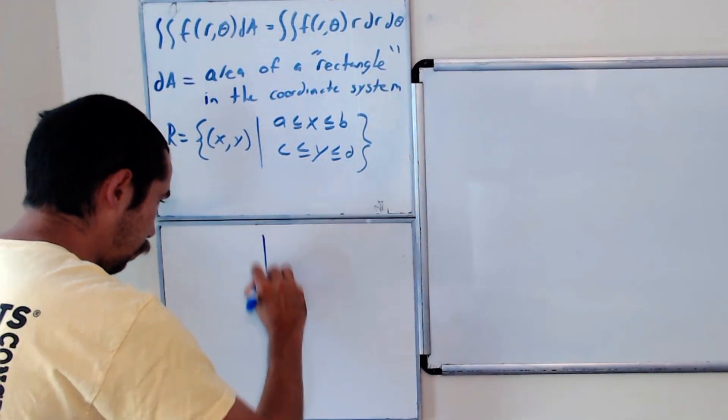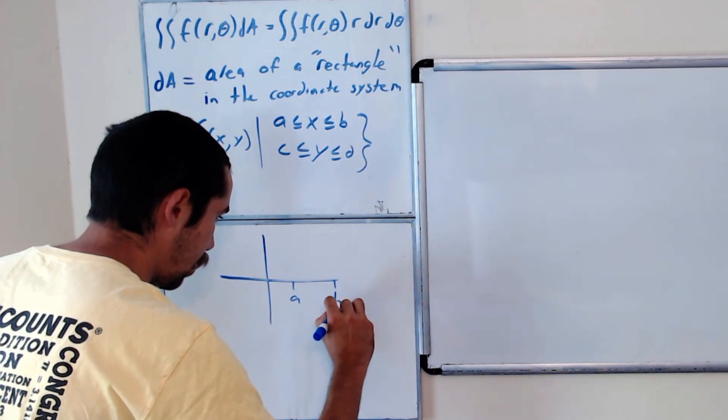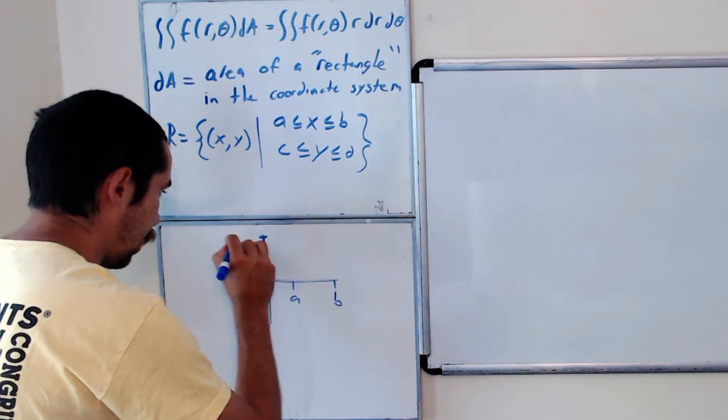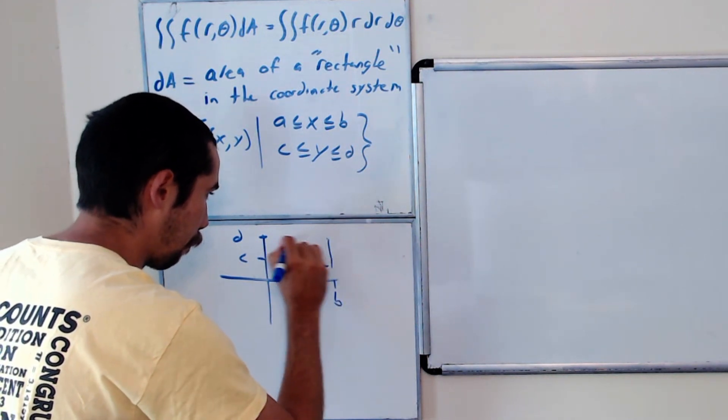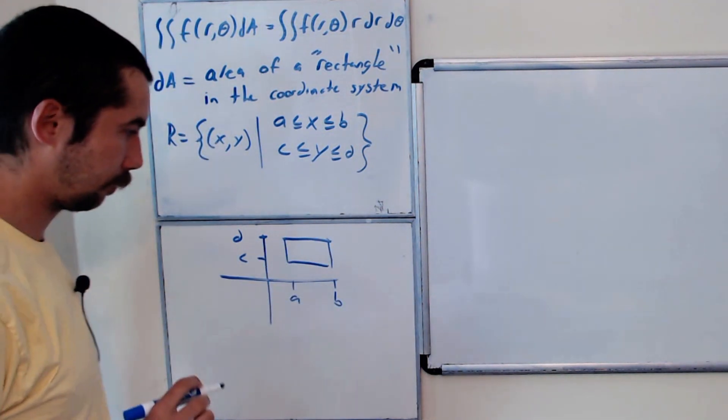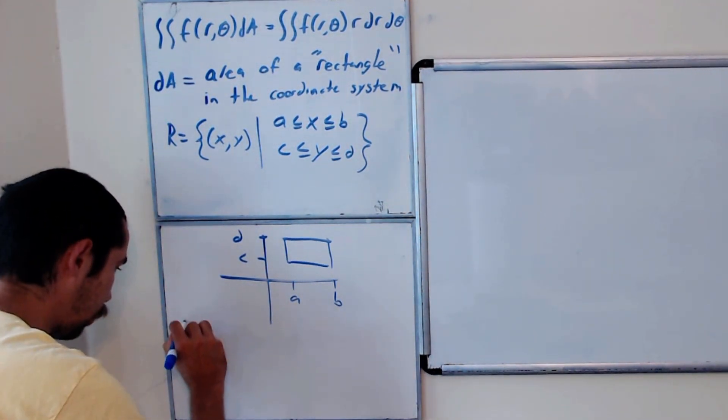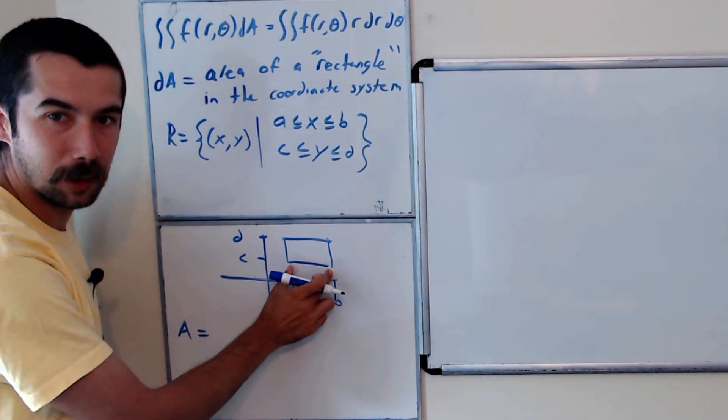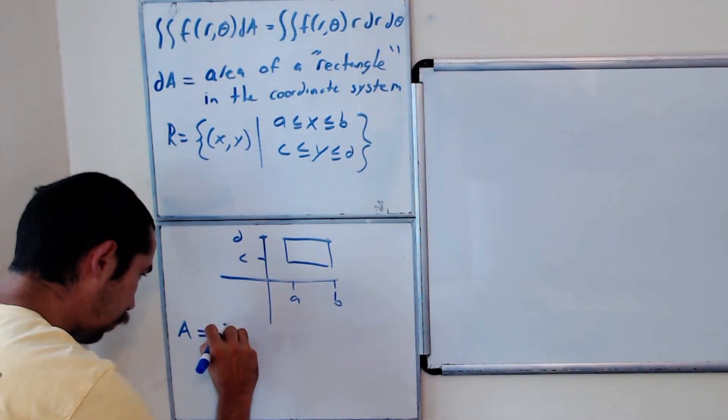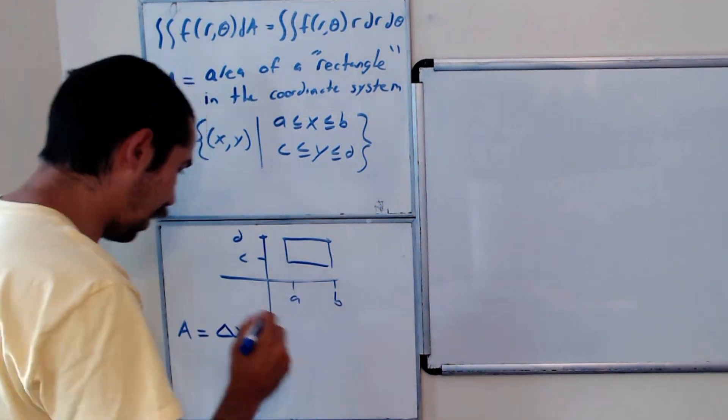So it's going to look like, you know, maybe here's a and here's b, here's c and here's d. That's going to look like this rectangle here. And what is the area of this rectangle? It's the change in x, which we'll call delta x, times the change in y, which is delta y.